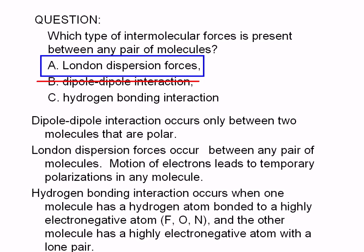Hydrogen bonding interaction occurs only when one molecule has a hydrogen atom bonded to a highly electronegative atom, fluorine, oxygen, or nitrogen, and the other molecule has a highly electronegative atom with a lone pair. So choice C is incorrect as well.